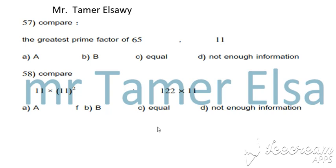Greatest prime factor of 65. To factor 65, 65 equals 5 multiplied by what? 12. 5 times 12 is 60. 5 times 13. 5 times 13 is 65.